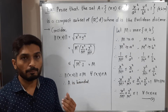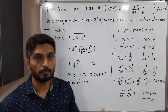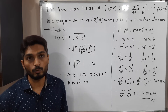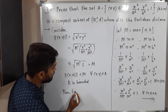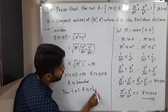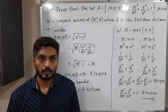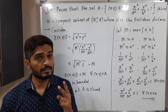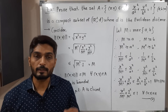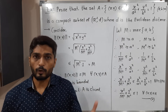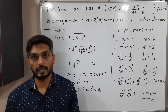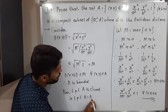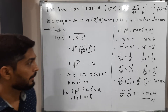We have proved A is bounded. Now our second target is to prove that A is closed. To prove A is closed, we can use any of three equivalent definitions: the complement is open; A contains all its limit points; or A = Ā (A equals its closure). We will prove that A = Ā.